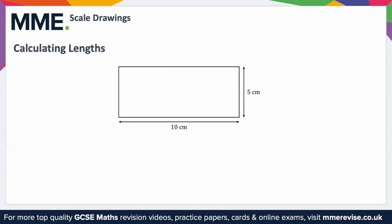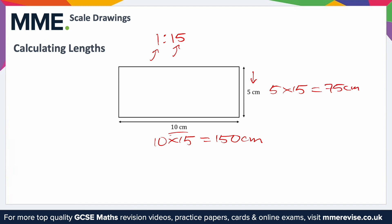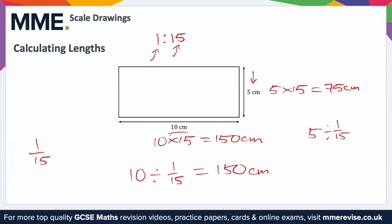We can use a scale or scale factor to calculate lengths or distances when only given a scale drawing. For example, here is a scale drawing of a rug with a scale of 1 to 15. To find the actual dimensions, multiply the drawing measurements by 15. So 10 times 15 gives an actual length of 150 centimetres, and 5 times 15 gives an actual width of 75 centimetres on the real rug. If given the scale factor 1/15 instead, divide the drawing dimension by 1/15 to get the same results.